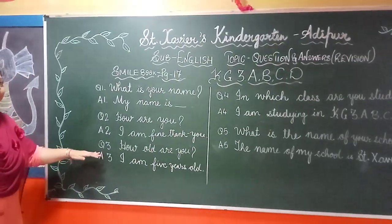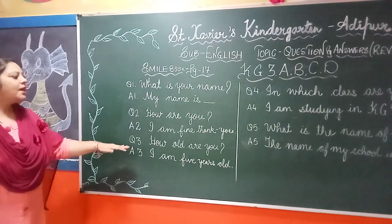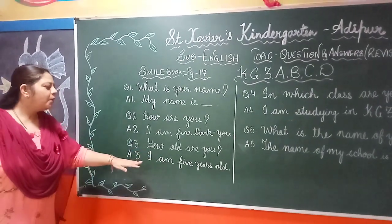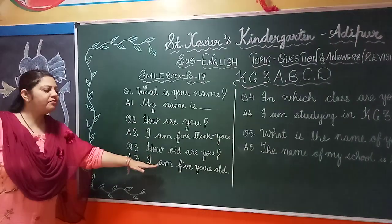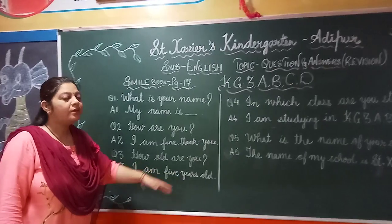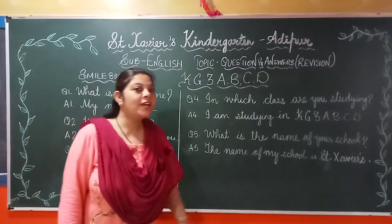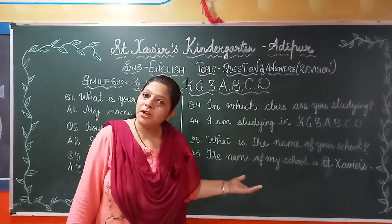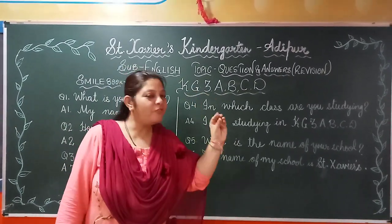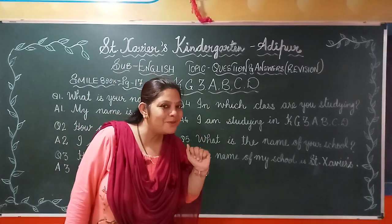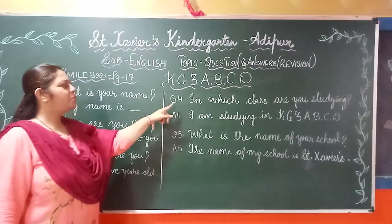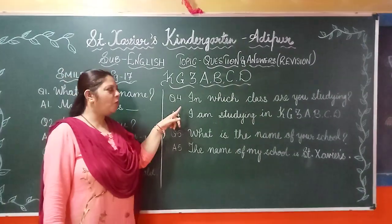Question number three: How old are you? I am five years old. Kya hai? How old are you? I am five years old.